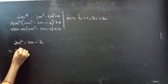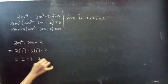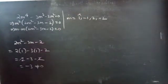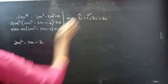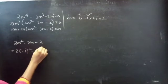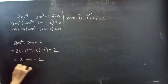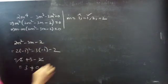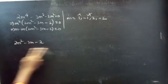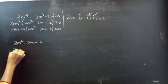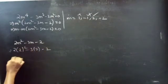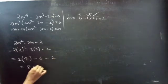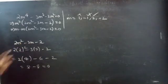Let's try m = 1: 2 - 3 - 2 = -3, not equal to 0, so m = 1 does not satisfy the polynomial. Let's try m = -1: 2 + 3 - 2 = 3, not equal to 0, so m = -1 does not satisfy. Let's try m = 2: 2(4) - 3(2) - 2 = 8 - 6 - 2 = 0. So m = 2 satisfies this polynomial.